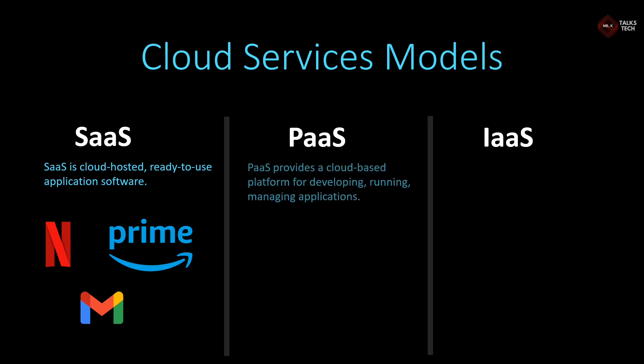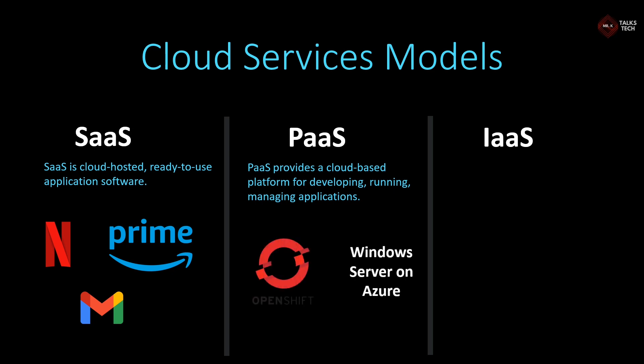Next, Platform as a Service. It provides a cloud-based platform for developing, running, and managing applications. Basically it gives you the platform for building your own software or application. Some examples are OpenShift Red Hat and Windows Server on Azure, where you could use these platforms to build or run your applications.